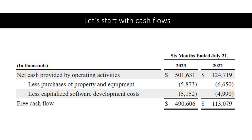Here's an example using a company called Splunk, which we recently covered — there's a research piece on our website. See net cash provided by operating activities? For the six months of 2023, it's $500 million. Then you subtract purchases of property and equipment — CapEx, capital expenditures — and capitalized software development costs. For Splunk, free cash flow is not that different from net cash provided by operating activities because it's a software business and they're not capital intensive. For all practical purposes, when considering SaaS companies, these two numbers should be roughly the same.